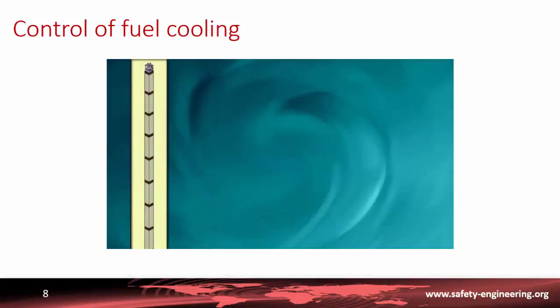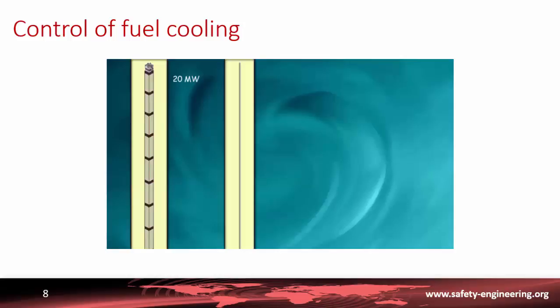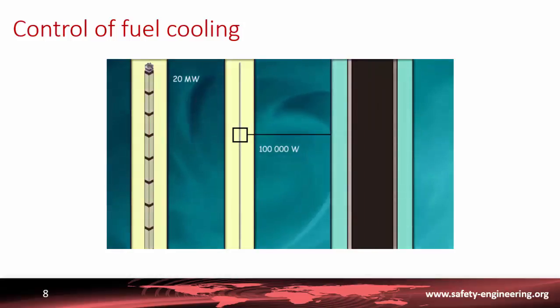This cooling system must be highly effective. In the reactor vessel the water rises up inside the fuel assemblies at high speed, passing from bottom to top in less than one second. It is necessary to extract around 20 megawatts from each fuel assembly when the reactor is operating at full power and around 100,000 watts from each fuel rod.